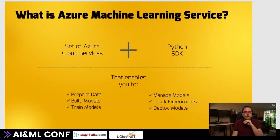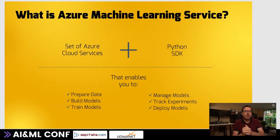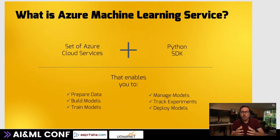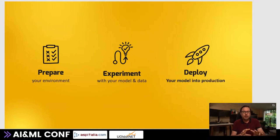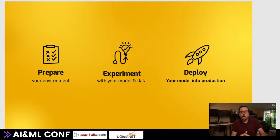Azure Machine Learning service is not just one thing - it is a set of cloud services that work together, controlled by the Python SDK or an Azure CLI. That enables us to prepare and manage our data, build and train our models, manage our models, and finally pick that model up and deploy it. To do that, we go through three stages: set up our environment, experiment with our model and data, and then deploy it into production.